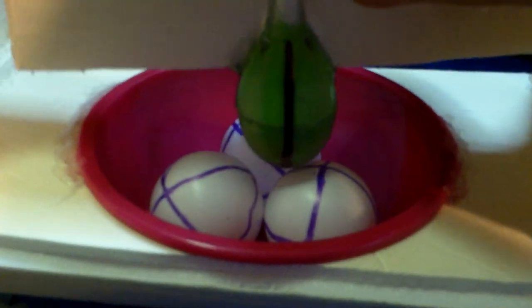On the bottom of the bowl you can see there's two rings around the bowl where the balls touch the bowl.